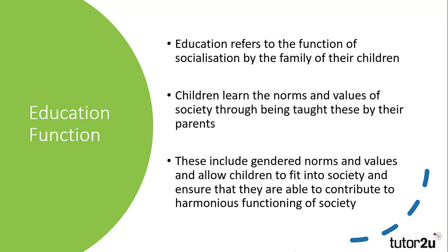The third function outlined by Murdoch is that of education. This refers to the socialisation by the family of their children and is similar to the concept of primary socialisation discussed by Parsons. Children are taught the norms and values of the society they live in by their parents — acceptable behaviours in social situations, language use, values such as hard work, and socially approved goals. This ensures the reproduction of society's norms and values from one generation to the next, enabling children to fit into society and contribute to its harmonious functioning. Critics suggest this could lead to the stagnation of society.